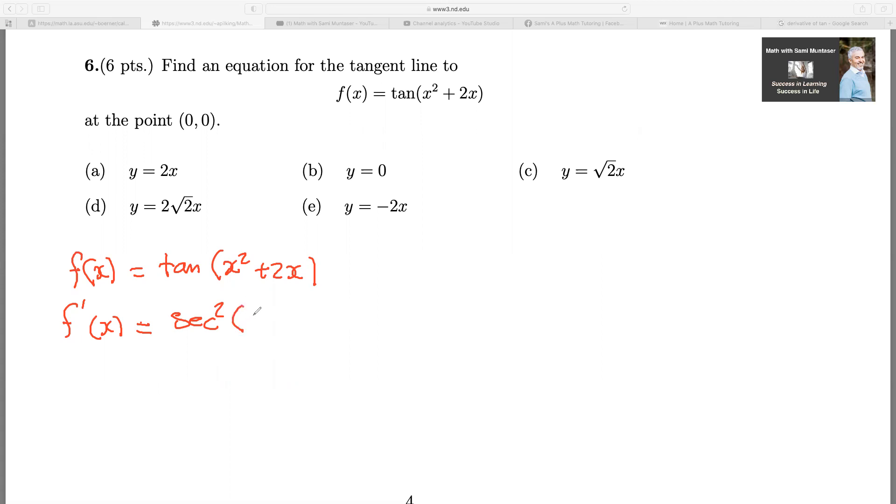And then you write the x squared plus 2x the same way. Now this x squared plus 2x, you're doing the secant of that. So this is attached to the secant.